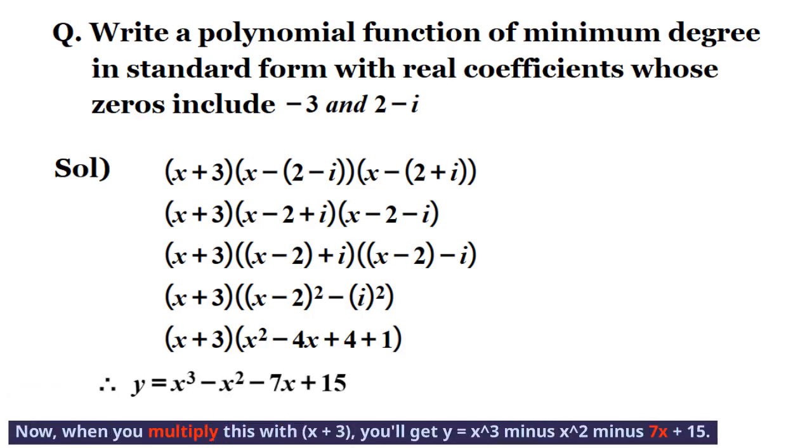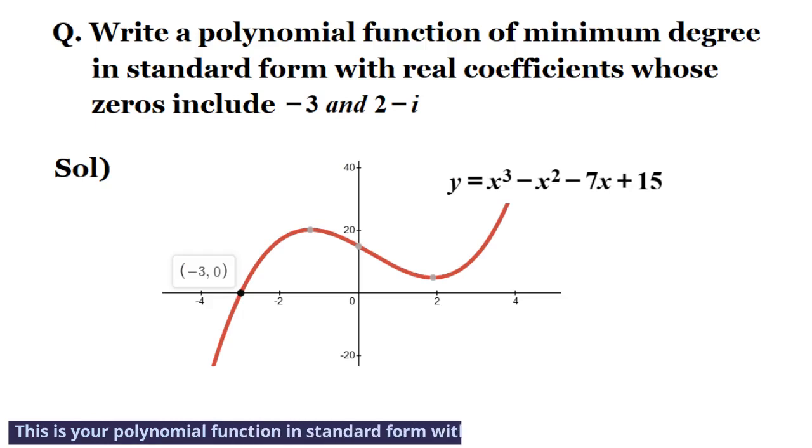Now, when you multiply this with (x plus 3), you'll get y equals x cubed minus x squared minus 7x plus 15. This is your polynomial function in standard form with real coefficients.